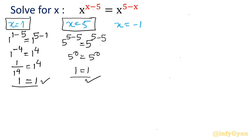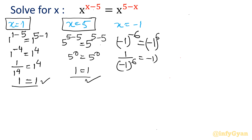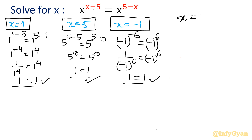For x = −1, this is special: (−1)^(−1−5) = (−1)^(5−(−1)), i.e., (−1)^(−6) = (−1)^6. Writing the negative exponent in the denominator: 1/(−1)^6 = (−1)^6. Since (−1) to any even power equals 1, this is 1 = 1 — true. All three solutions are verified.